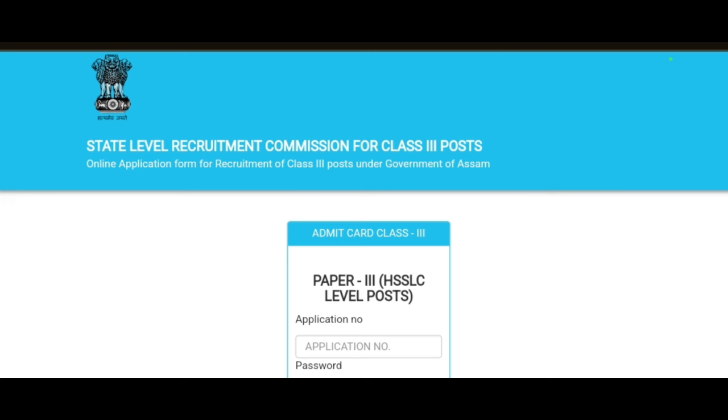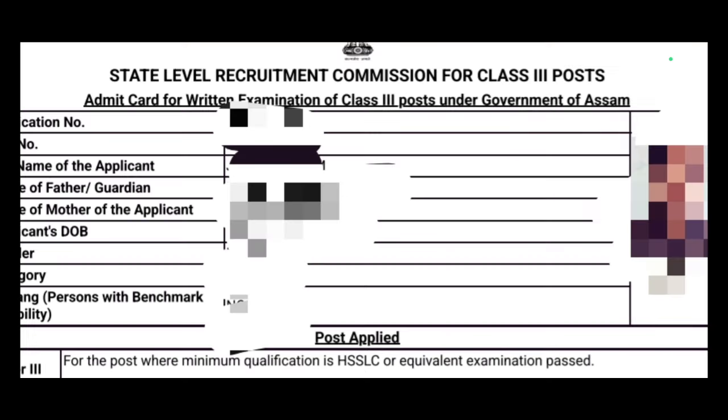This is a very important instruction. Once you download the admit card, you can see the application number, roll number, applicant name, father or guardian name, mother name, applicant's date of birth, gender, category, and so on.